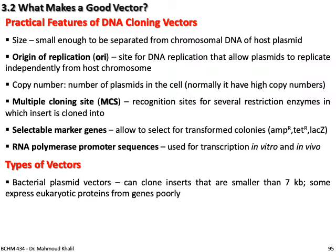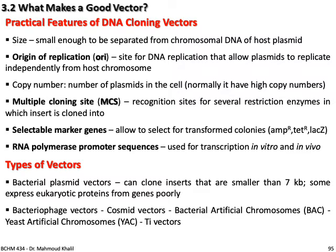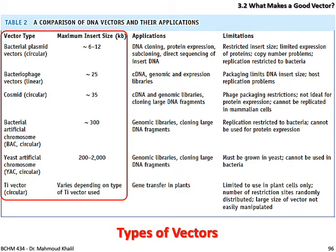Types of vectors: bacterial plasmid vectors can clone inserts smaller than 7 kb; some express eukaryotic proteins from genes poorly. Other types include bacteriophage vectors, cosmid vectors, bacterial artificial chromosomes (BAC), yeast artificial chromosomes (YAC), and Ti vectors. Please study the sizes and types of vectors from the comparison table, which compares bacteriophage vectors, cosmids, bacterial plasmid vectors, BACs, YACs, and Ti vectors.